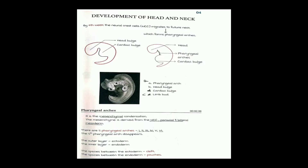In the first diagram, we can see the head bulge and the cardiac bulge — the neck region is missing. What forms the neck region is the pharyngeal arches, which are formed by the fourth week. The neural crest cells migrate and form the future neck, and these neural crest cells form the pharyngeal arches. In the second diagram we can see the head bulge, the pharyngeal arches, and the cardiac bulge.